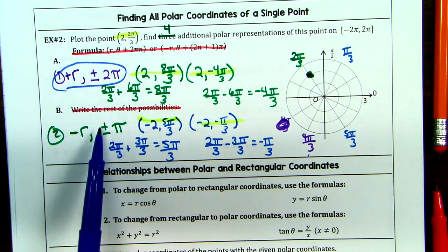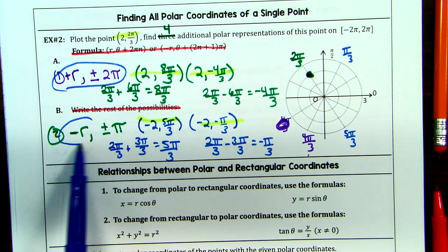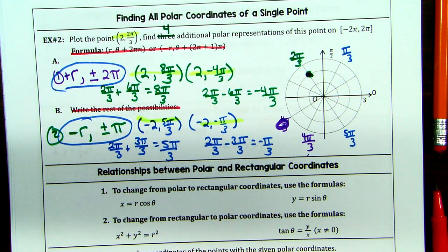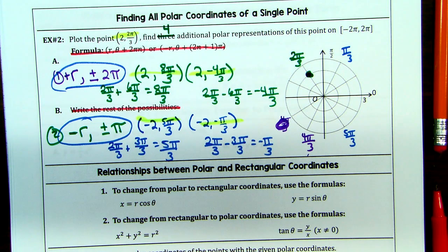This is one way of finding two of them; this is a way of finding another two. You could keep going — adding another pi, subtracting as many times as you want — because it's coterminal. But in the homework it says find two additional, so you pick whatever two you want.